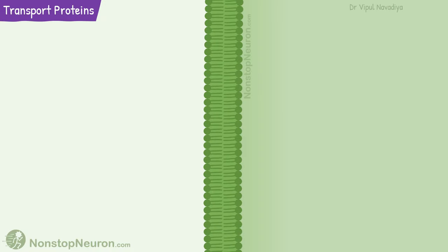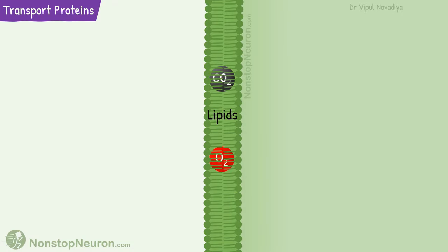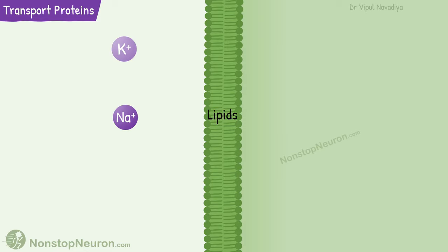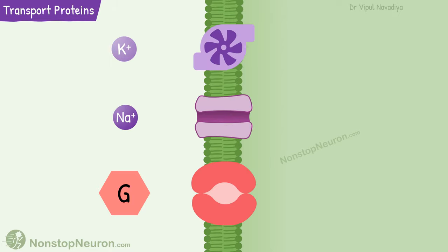In the video on biological membrane, we have seen that the membrane is made up of lipids. Lipid soluble substances like oxygen and carbon dioxide can dissolve in the membrane and therefore can cross through the membrane itself. However, lipid insoluble substances like sodium and potassium ions cannot dissolve in the membrane and therefore cannot cross it. Some molecules like glucose are simply too large to penetrate the membrane. So for such substances, we have various transport proteins on the membrane.